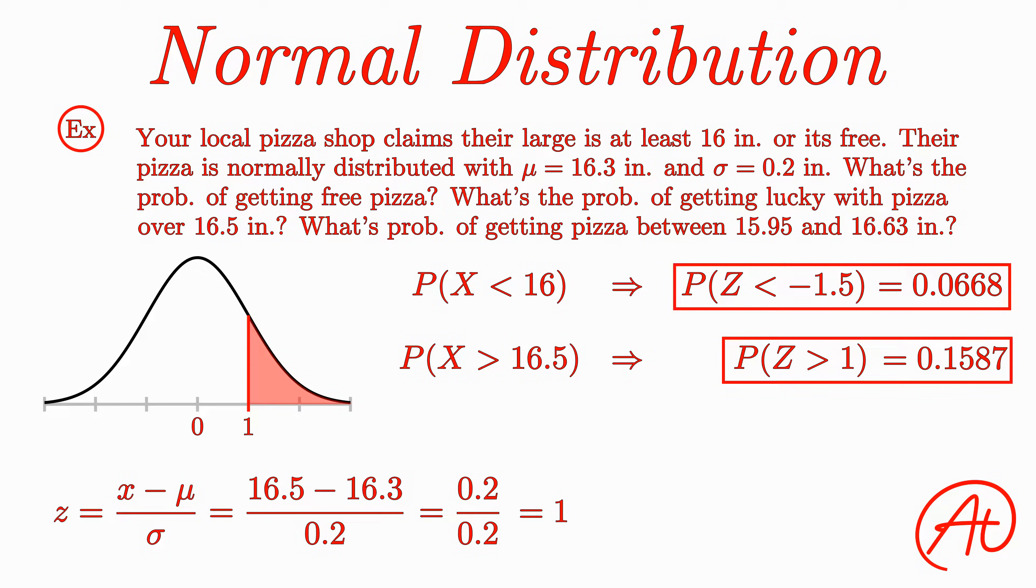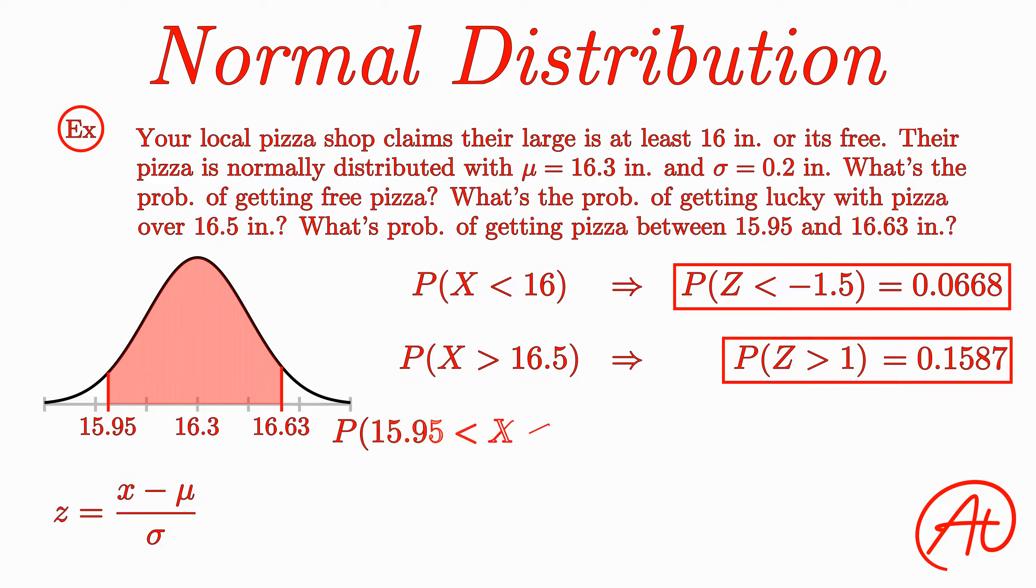Not too shabby! Finally, we want to find the probability of getting a pizza between 15.95 and 16.63 inches. First, as always, let's find some z-scores. For 15.95, we get negative 0.35 divided by 0.2, or negative 1.75. And for 16.63, we get 0.33 divided by 0.2, or 1.65.